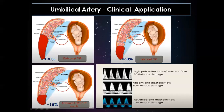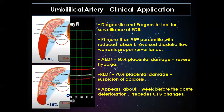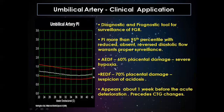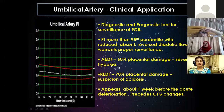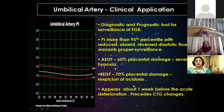The umbilical artery acts as both a diagnostic and prognostic tool for FGR surveillance. PI more than 95th percentile and reduced, absent, or reversed end-diastolic flow warrants proper surveillance. Absent diastolic flow represents hypoxemia; reversed end-diastolic flow is suspicious for acidosis. These changes appear about one week before acute deterioration and always precede CTG changes.